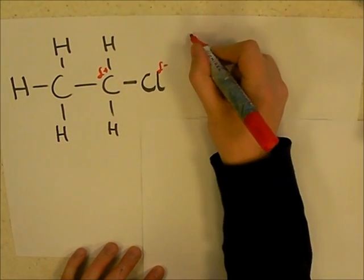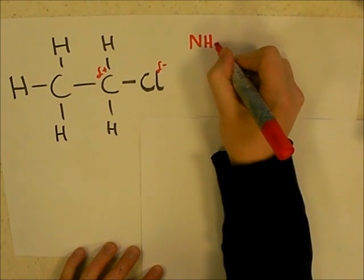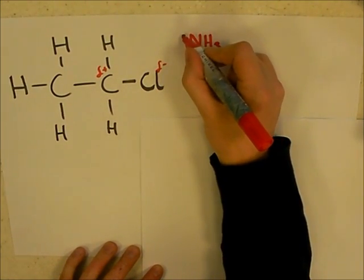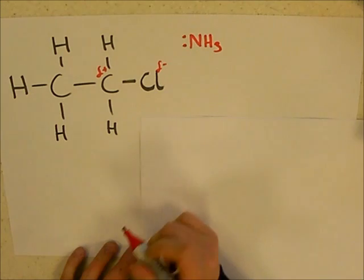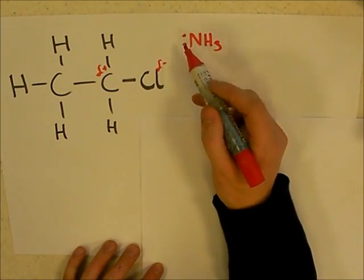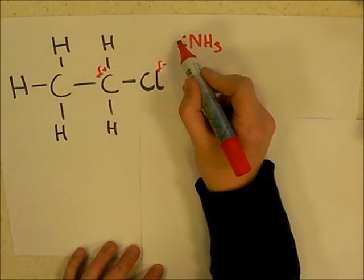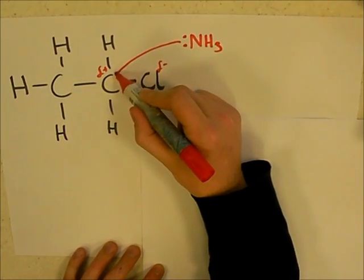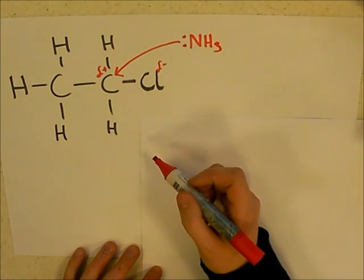So in this example we're using ammonia. We've got NH3 and this can act as a good nucleophile because it's got a lone pair on the nitrogen. That lone pair is wanting to attack an electron-deficient area such as this positive carbon here. So we've got a clear double-headed arrow from the lone pair to the carbon.